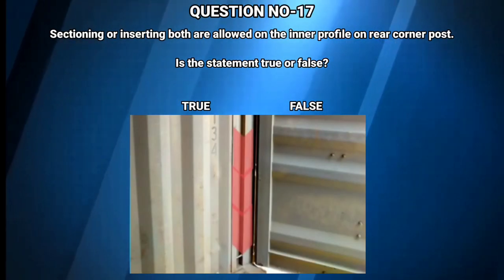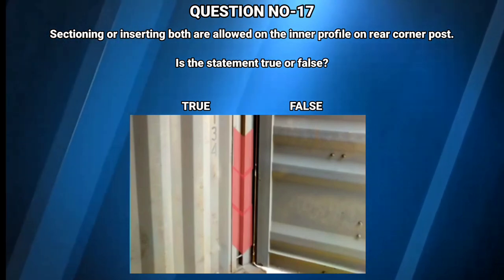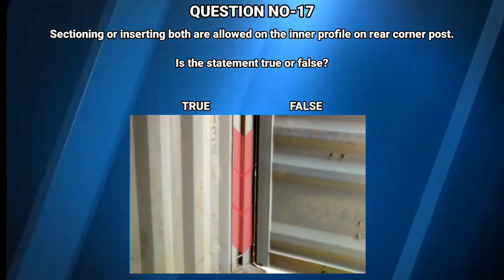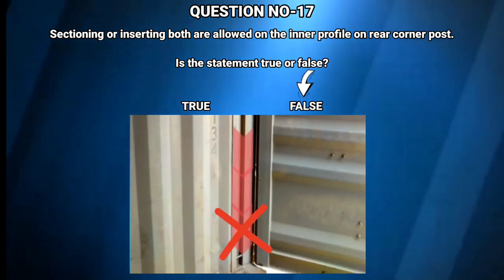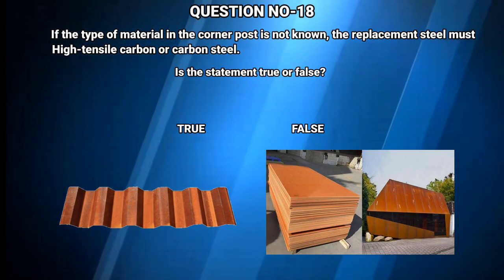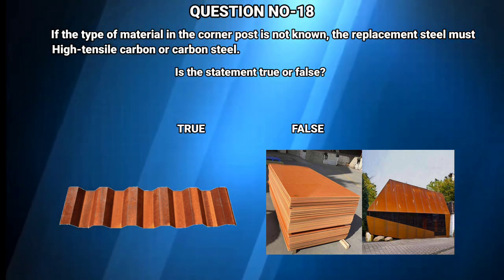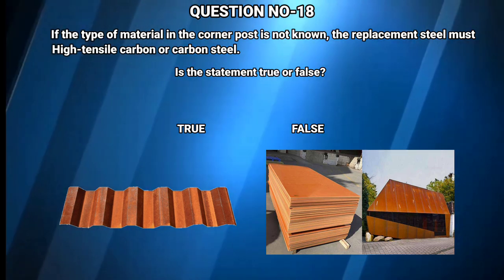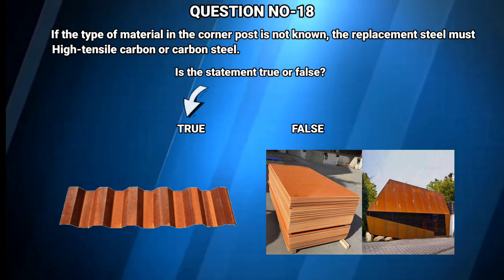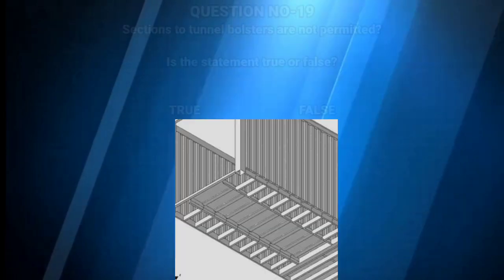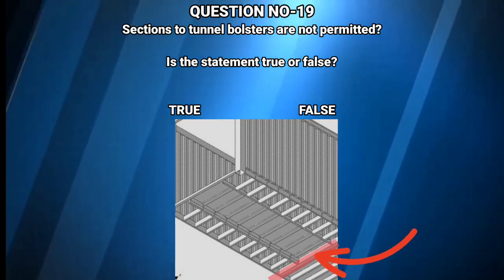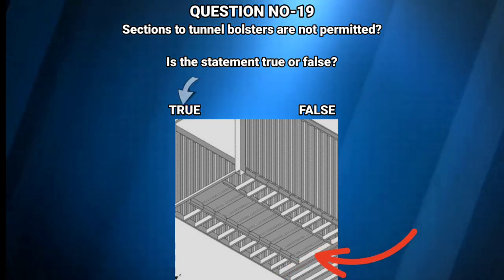Question number 17: Sectioning or inserting — both are allowed on the inner profile on the rear corner post. Is the statement true or false? The answer is false. Question number 18: If the type of material in the corner post is not known, the replacement steel must be high tensile carbon or carbon steel. Is the statement true or false? The answer is true. Question number 19: Sections to tunnel bolsters are not permitted. Is the statement true or false? The answer is true.